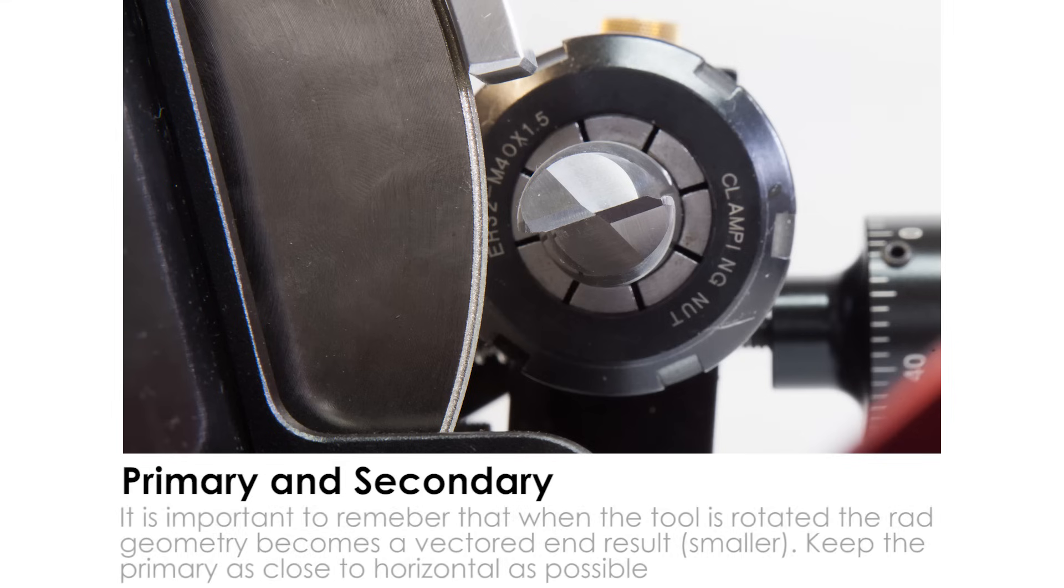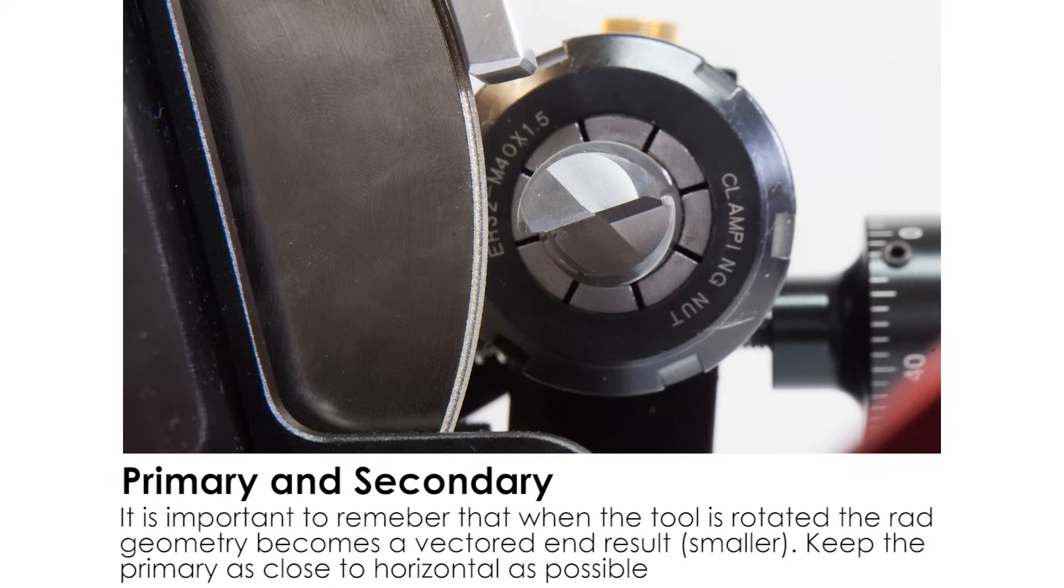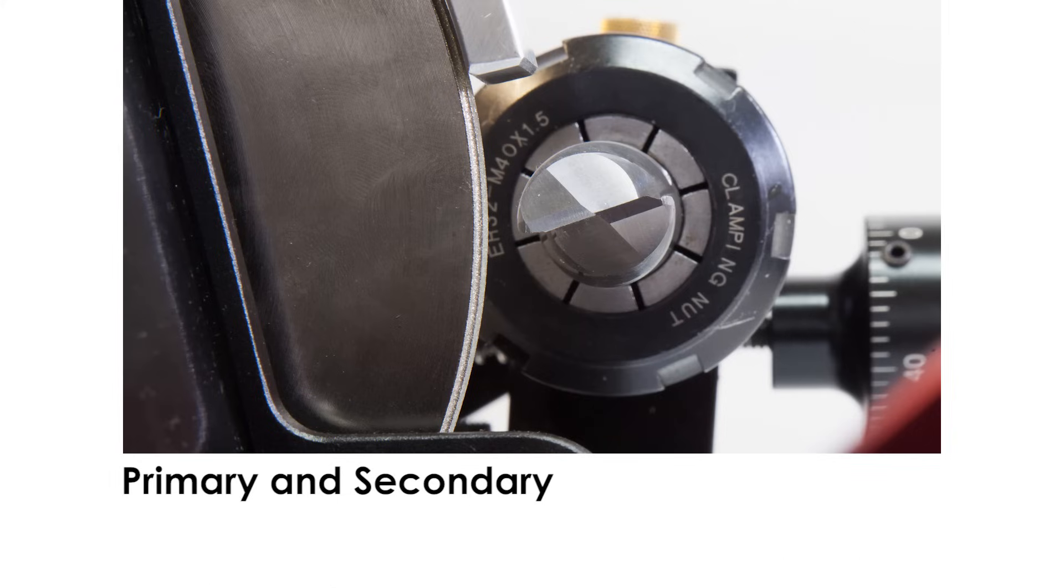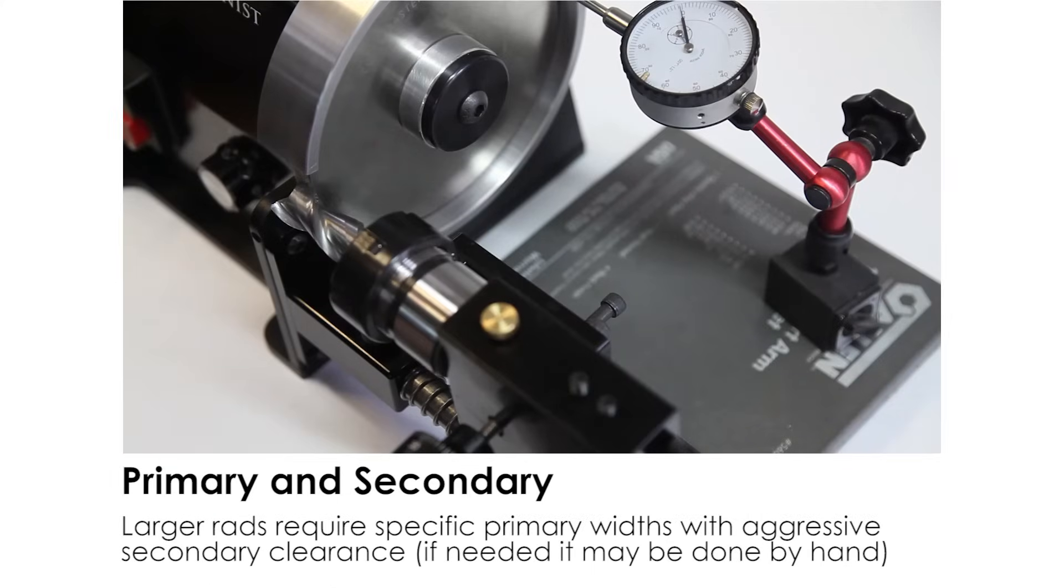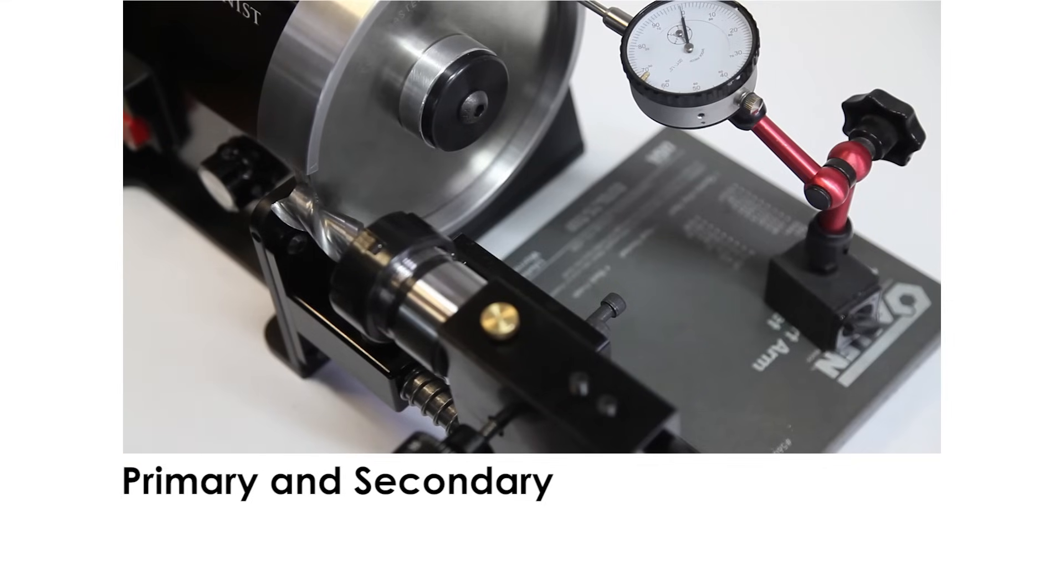To set the tool the flute should be horizontal and down maybe five degrees. This gives you some clearance. Depending on what you're machining, if you're machining aluminum you're probably going to want more clearance because you're going to be cutting faster. So you tip the tool down to obtain that clearance.